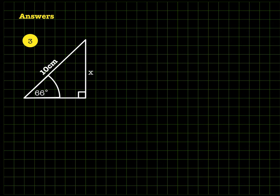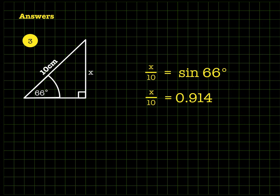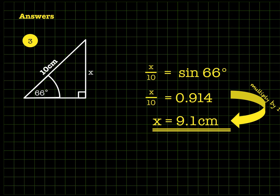Question three: same procedure. You have 66 degrees, a side x opposite it, and the hypotenuse is 10 centimeters. So x divided by 10 equals sine 66, which works out to 0.914 on the calculator. That relationship between the opposite side and the hypotenuse will always be 0.914 for any 66 degree right-angled triangle. So multiplying both sides by 10 gives x equals 9.1 centimeters. You can construct that triangle to confirm all the corners meet up.